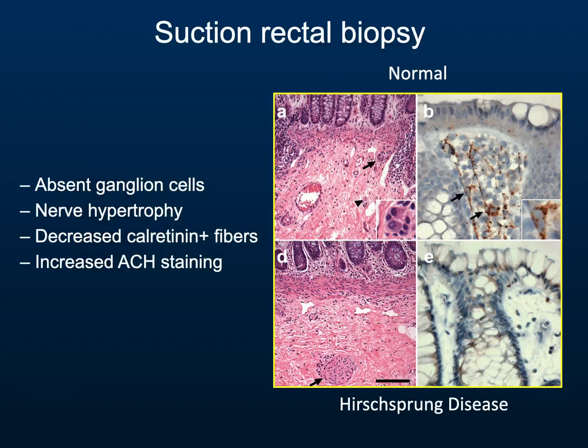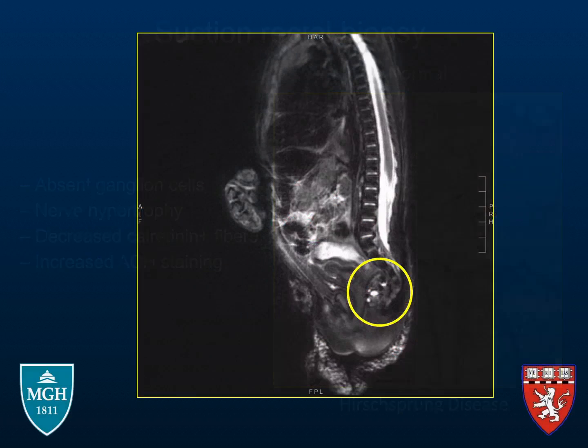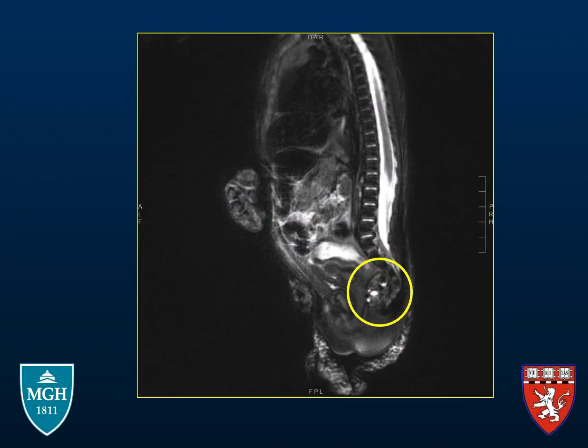The Hirschsprung's biopsy on this child demonstrated normal ganglion cells and normal calretinin staining, which is shown above. The child underwent an MRI, which was diagnostic for a presacral mass, and therefore Currarino's triad was diagnosed.